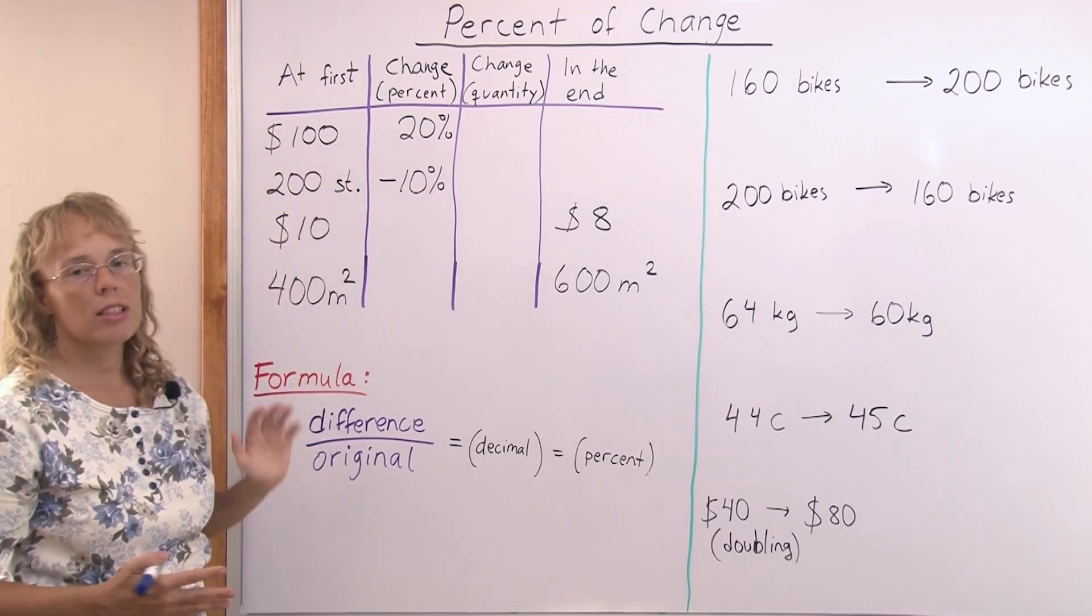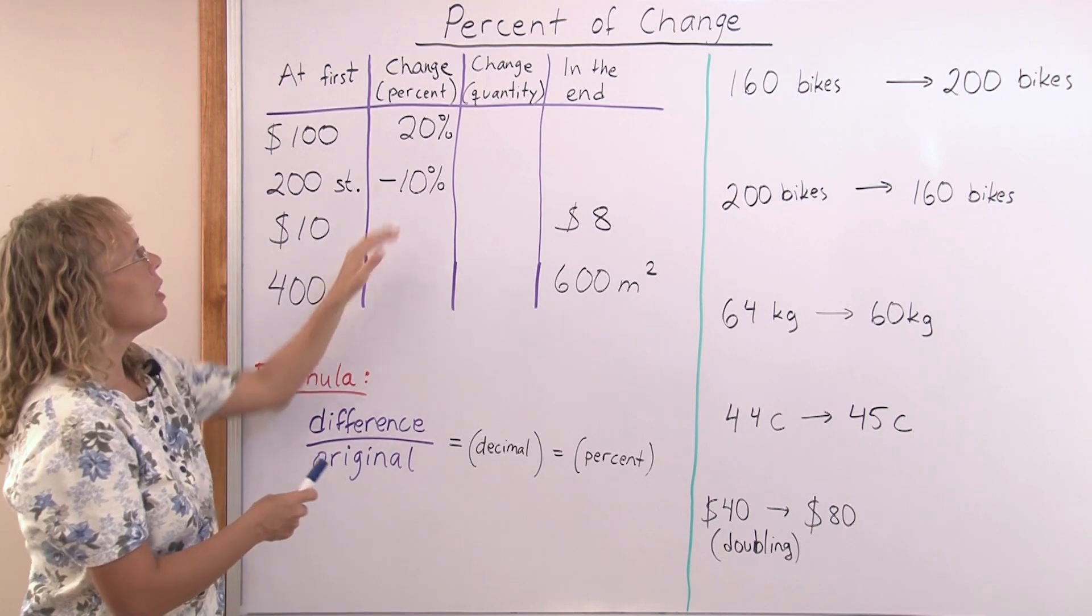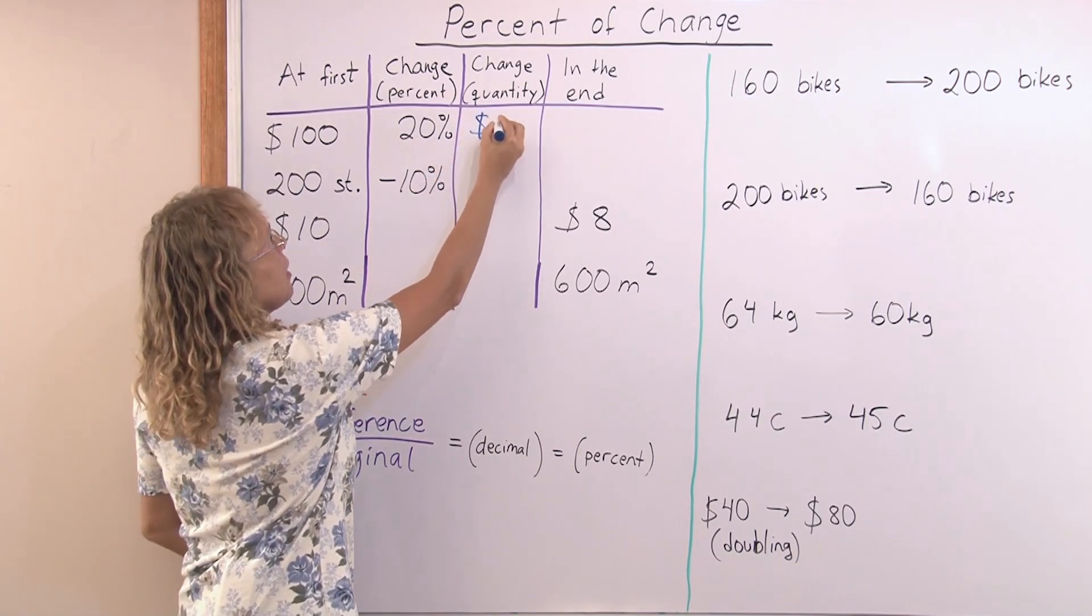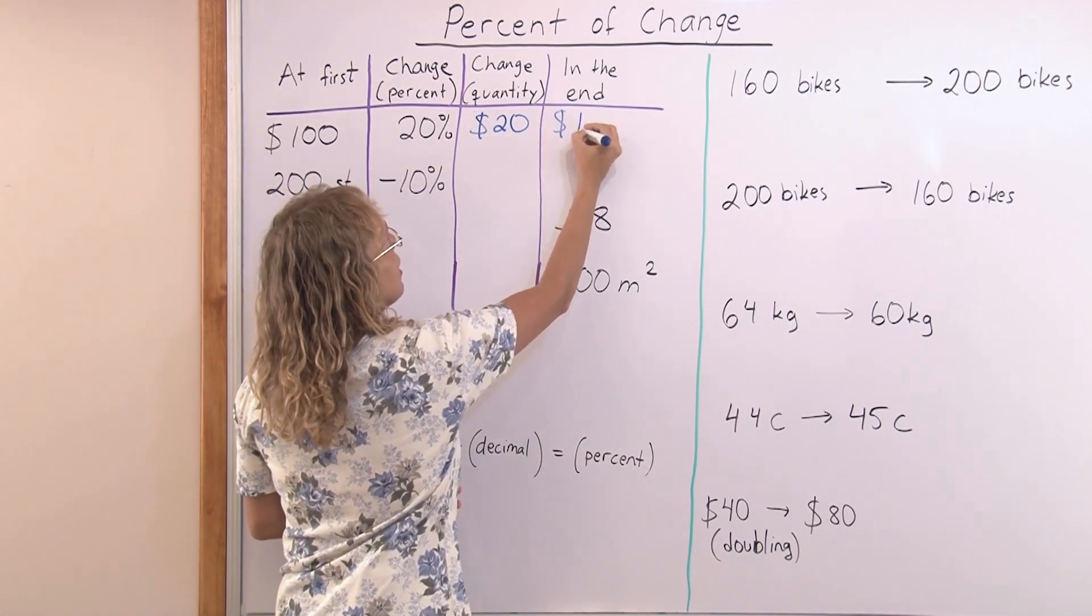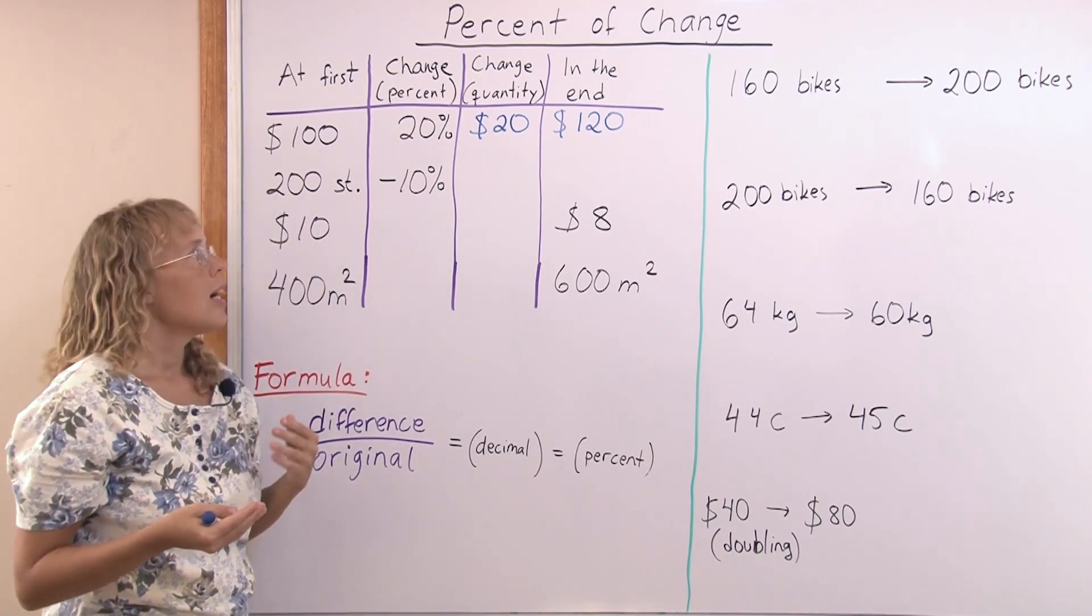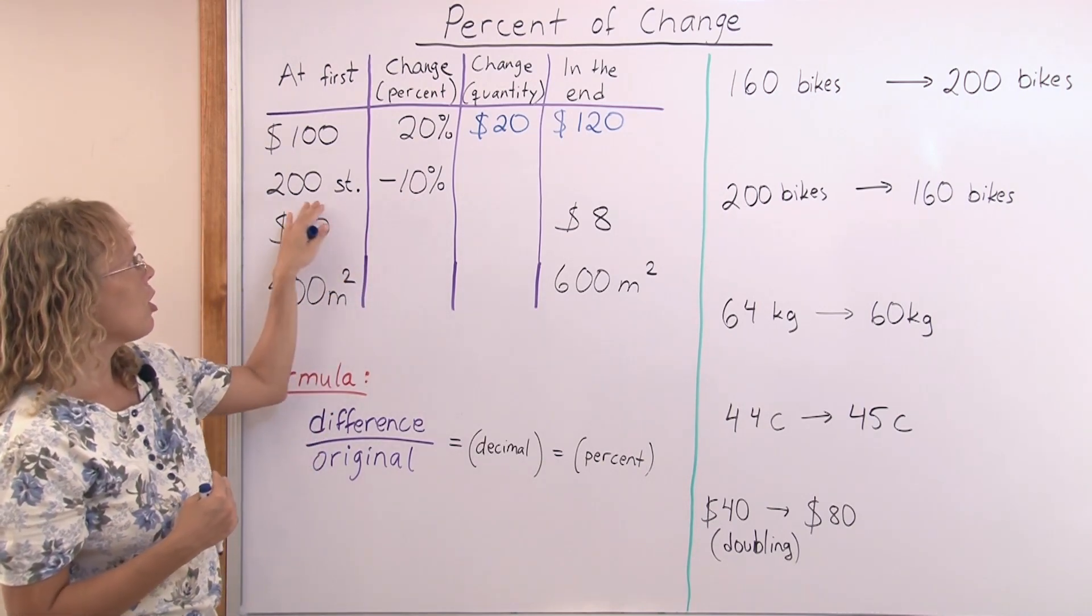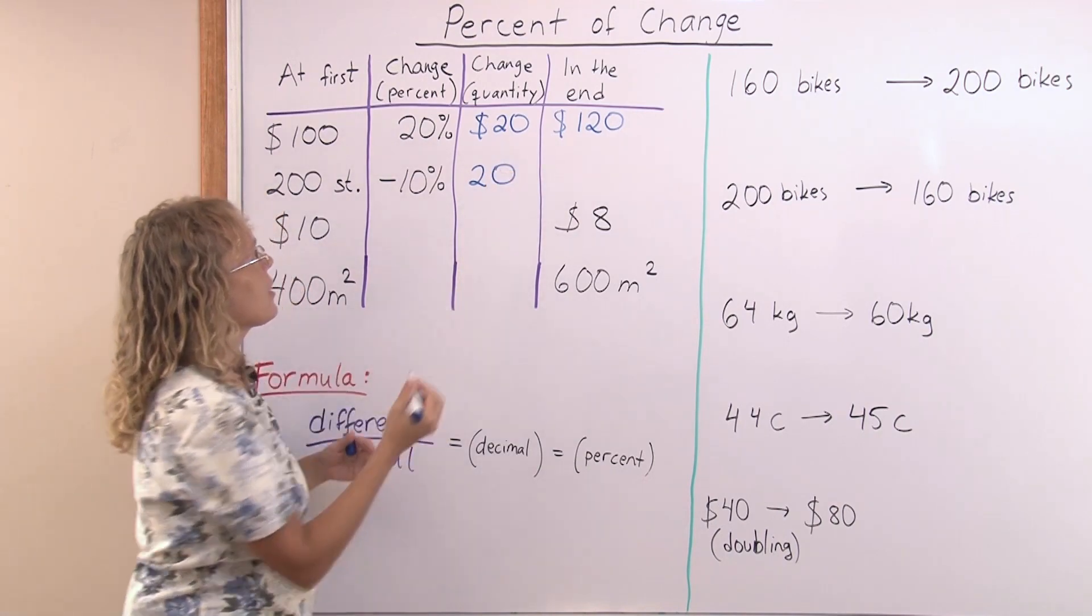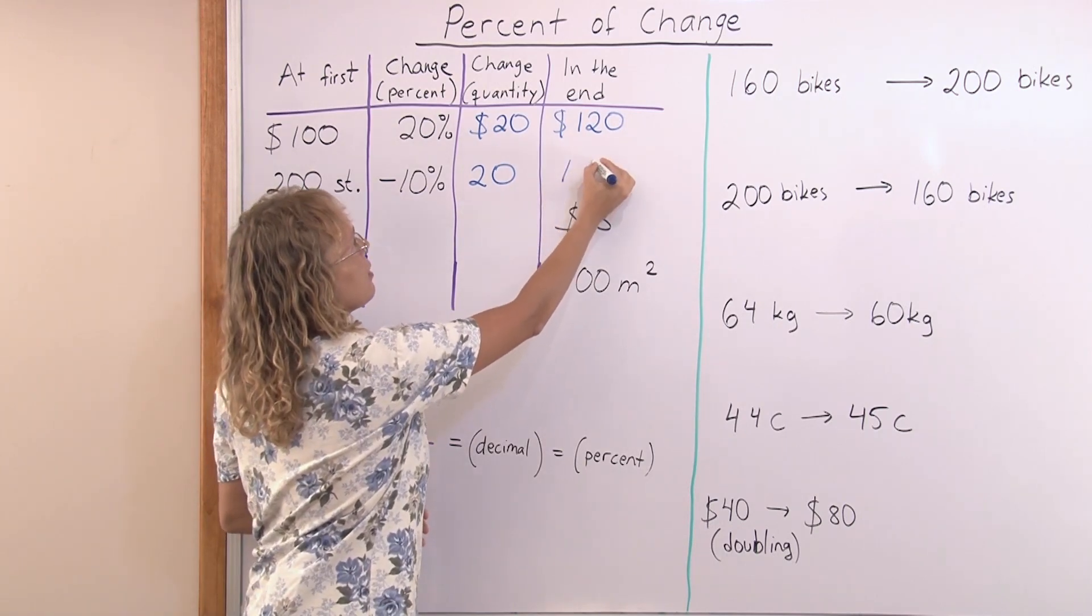Now let me show you how to calculate this. For example, we have something costing $100 and the price increases by 20%. What we do is we calculate 20% of this number. 20% of 100, which is pretty easy. It is $20. So that's how much the price increases and then we add to get the final price, 120. And now another one where we have 200 students and there will be 10% less students. We calculate 10% of this, which is easy. You just take the tenth part. It is 20 students. And that's by how much it will decrease. So we subtract 200 minus 20 and get 180 students.